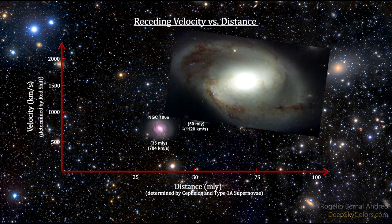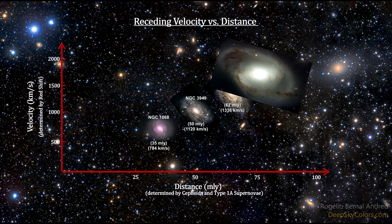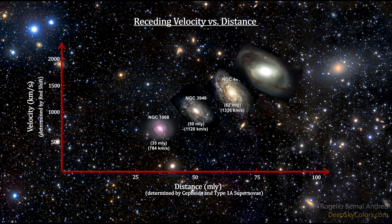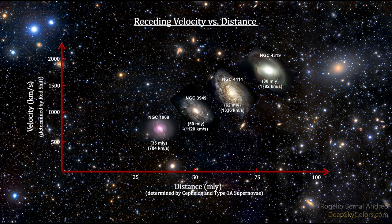NGC 4319, a galaxy with both Cepheid variables and Type Ia supernova, is 80 million light years away and receding at 1,792 kilometers per second.